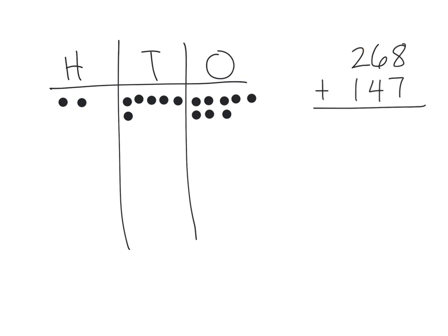Now I'm going to model 147 over here as well, and so that's going to be 100, and then there's 40, and there's 47. So there's our 147, and sure enough, that's what I was supposed to model.